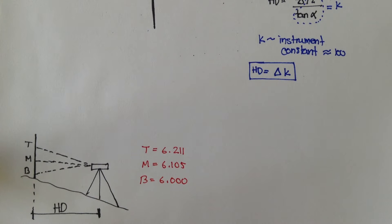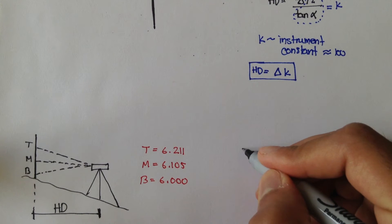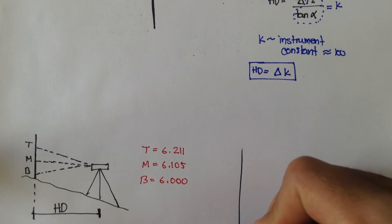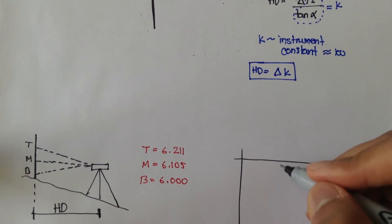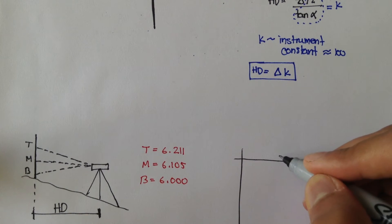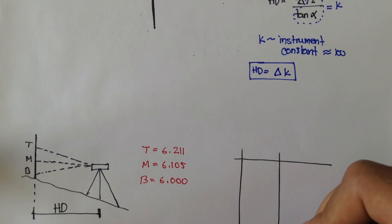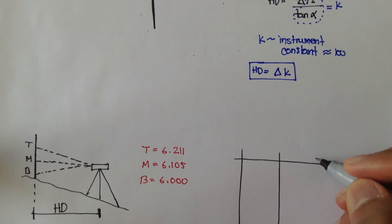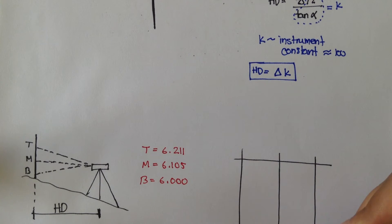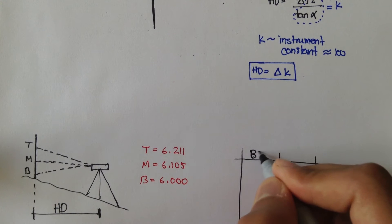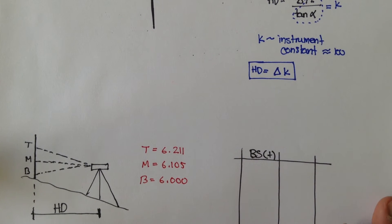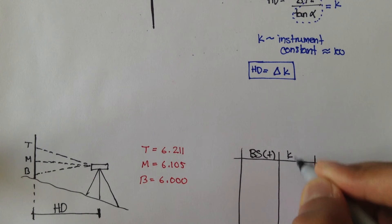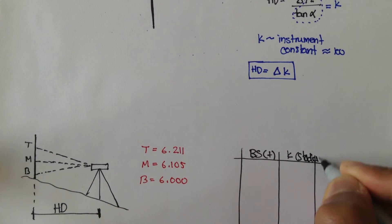Let's set up our little chart and I'll explain how we use stadias and how we use them to find our horizontal distance. Let's call this the back side column — remember, back side is always positive. And this is k, which is stadia.